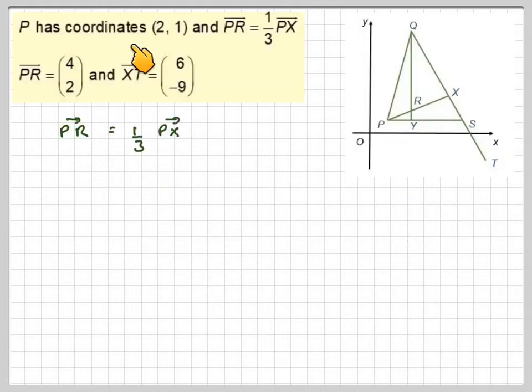P has the coordinates 2, 1. PR is 1 third of PX, and PR is 4, 2, and XT is 6, minus 9.